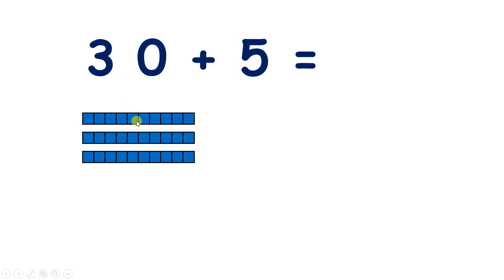So we have 30, which is 3 tens. And now if we have 5, so we have 5 units as well, we have the number 35.